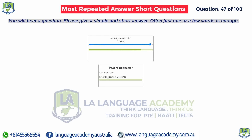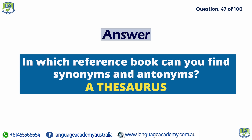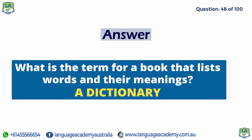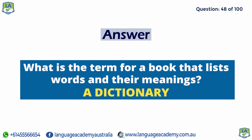In which reference book can you find synonyms and antonyms? A thesaurus. What is the term for a book that lists words and their meanings? A dictionary.